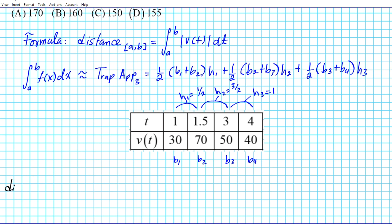So we're looking for the distance from one to four. The distance from one to four is an integral from one to four of the absolute value of v(t) dt.